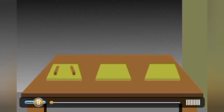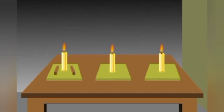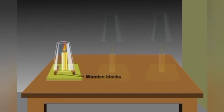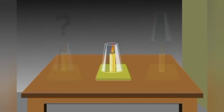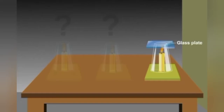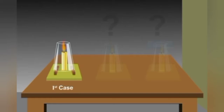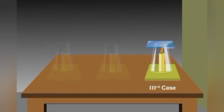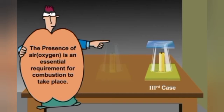Let us understand through a video clip whether air is essential for combustion. In the first case, a glass chimney with its base removed is placed over the candle on two wooden blocks — sufficient oxygen is supplied, so the candle burns completely. In the second case, the glass is placed directly on a plate with no wooden blocks — only limited air is present, so the flame flickers and produces smoke. In the third case, the glass is completely covered by a plate — no air is available, so the candle stops burning completely. We conclude that the presence of air is an essential requirement for combustion.